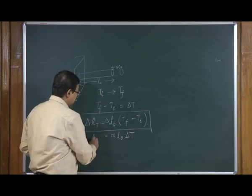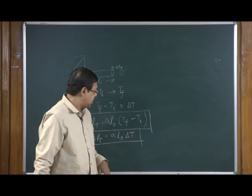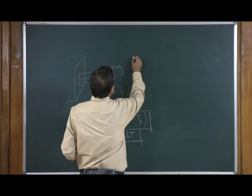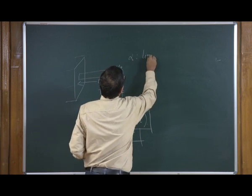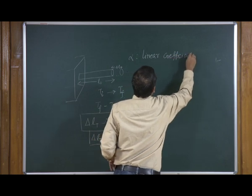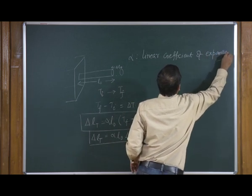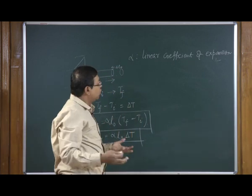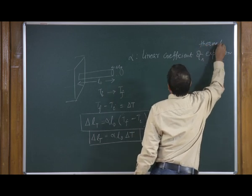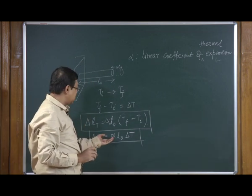The change in length can be written as delta L_T = alpha · L₀ · delta T, where alpha is the linear coefficient of thermal expansion. L₀ is the initial length before the temperature difference is applied, and this coefficient alpha appears as the proportionality constant in this equation.